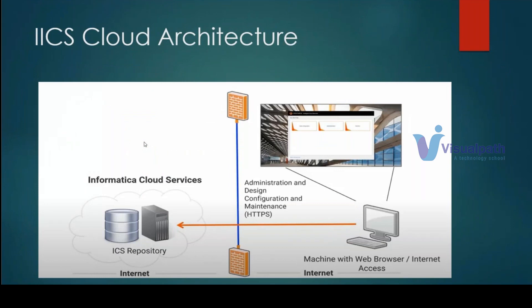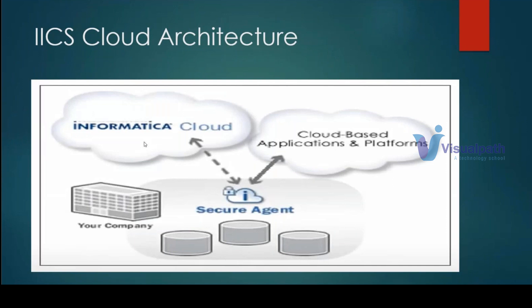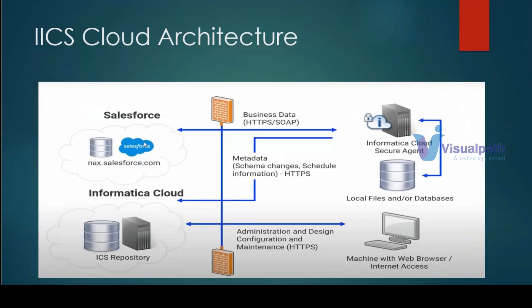Continuing with the architecture: when you configure your free trial account, you get administration, design, configuration, and maintenance functions. The red bricks represent the firewall. Within the firewall you have a repository and a machine with internet access. The secure agent talks to the cloud and to cloud-based applications. Your company manages its own data, while the secure agent controls local files and databases.